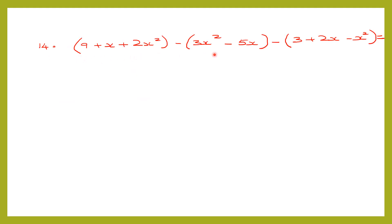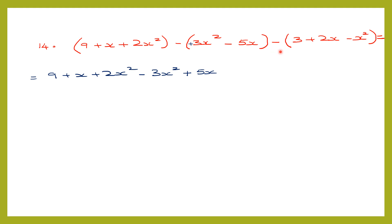Question 14. We have three expressions with minus signs in between. Let's remove the brackets first. We have 9 plus x plus 2x squared. Removing the first set of brackets with a minus sign before it: the sign of all terms inside changes, so plus 3x squared becomes minus 3x squared and minus 5x becomes plus 5x. Removing the next brackets with a minus sign: signs change again, giving minus 3 minus 2x plus x squared.